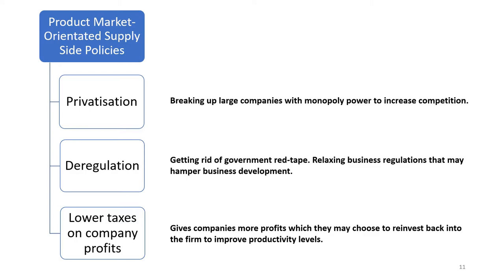Secondly, deregulation. Government regulation often forces firms to complete paperwork or obtain approval from government committees. This red tape is bad for businesses who may wish to change working practices quickly to increase their competitiveness. By relaxing regulations that hamper business development and slow businesses down, deregulation reduces barriers for firms who want to improve their productive efficiency quickly. This is a key example of the government giving more autonomy to the private sector and taking a step back.